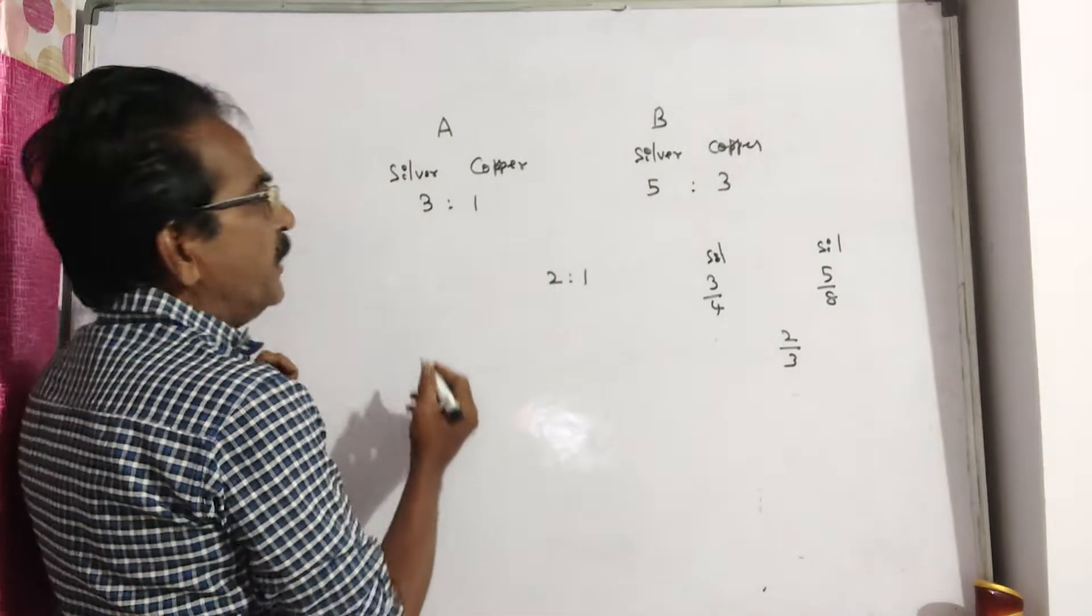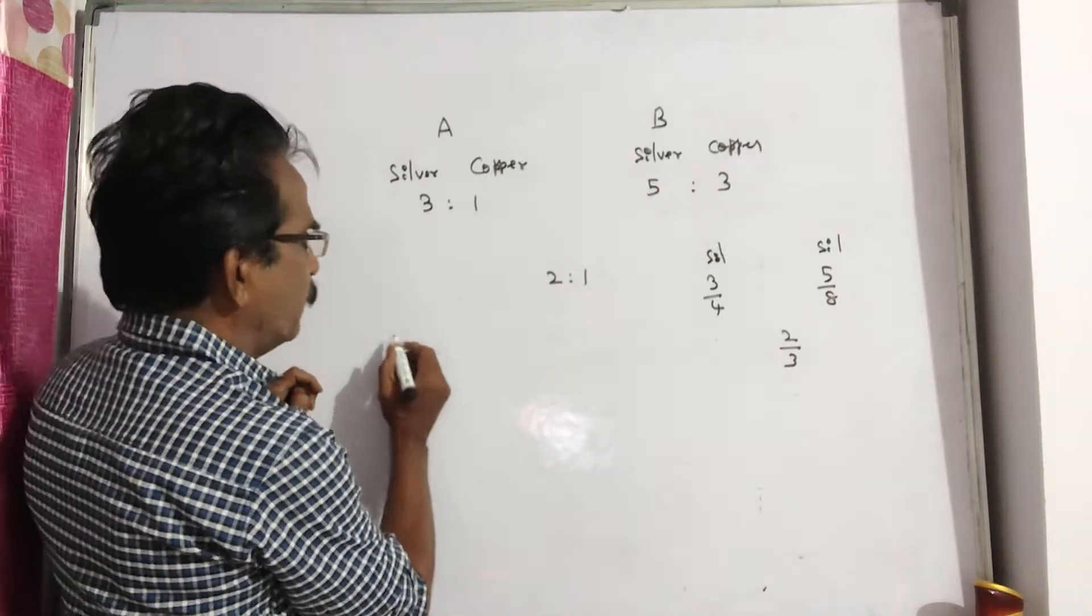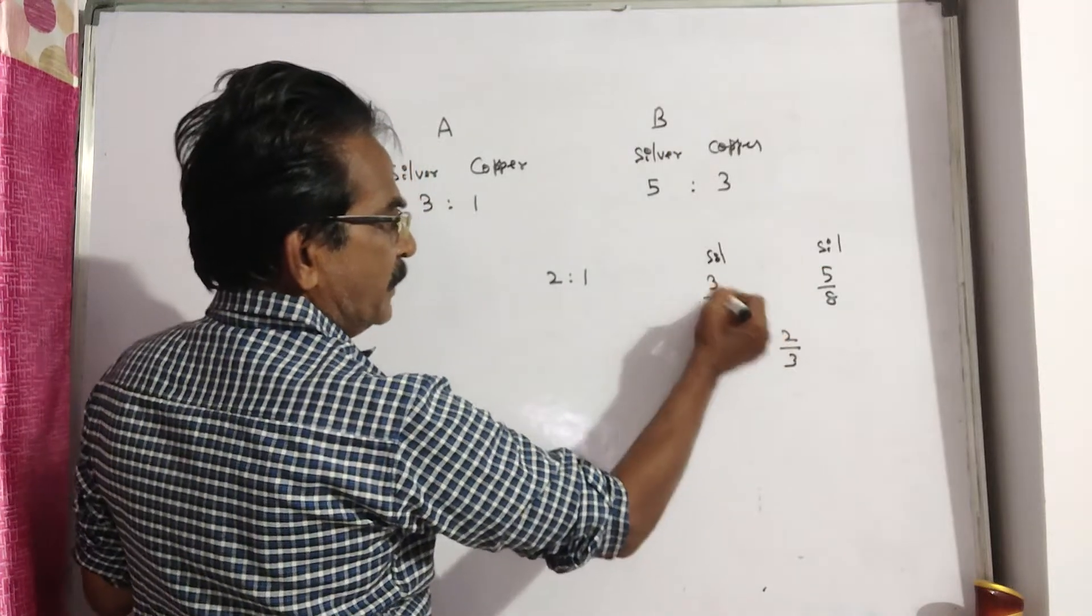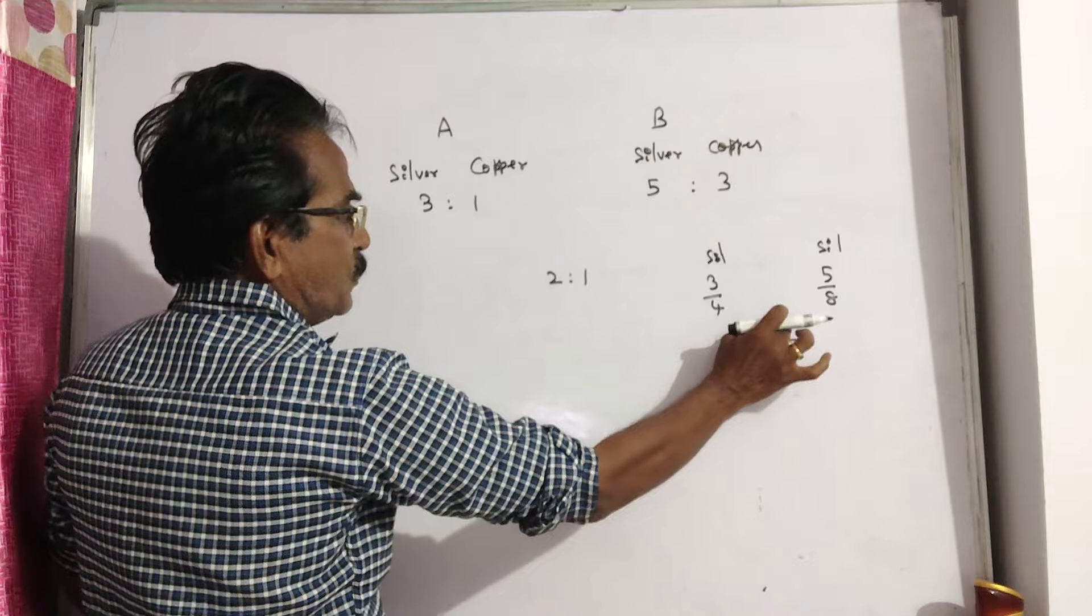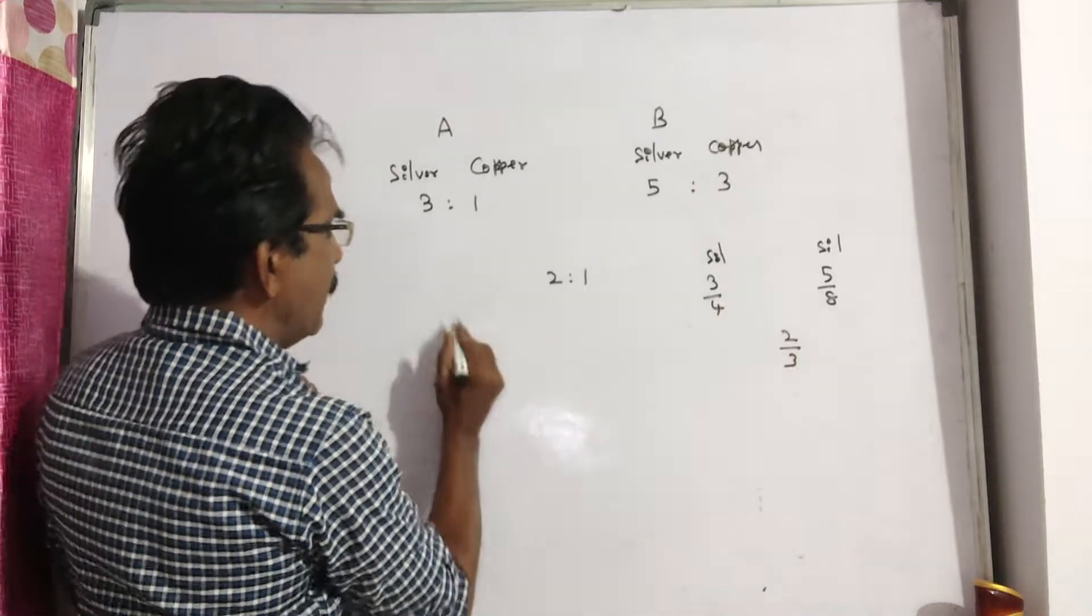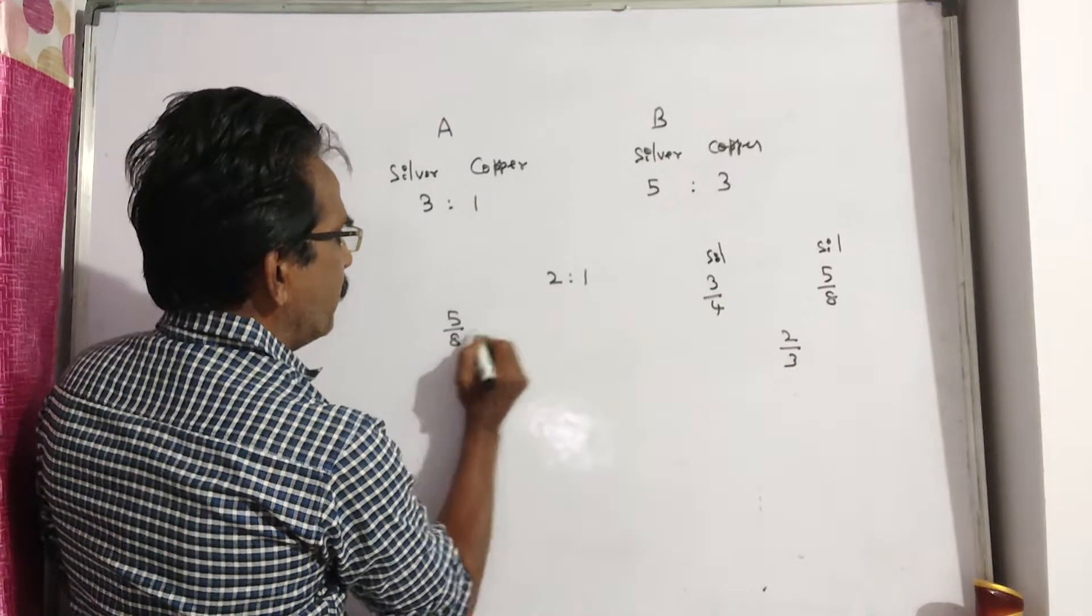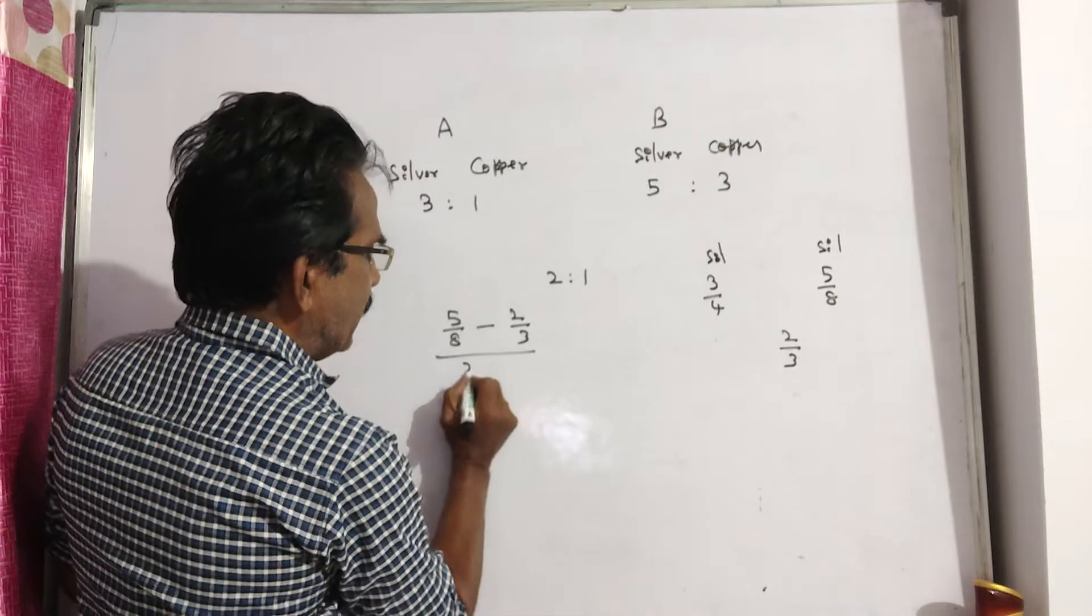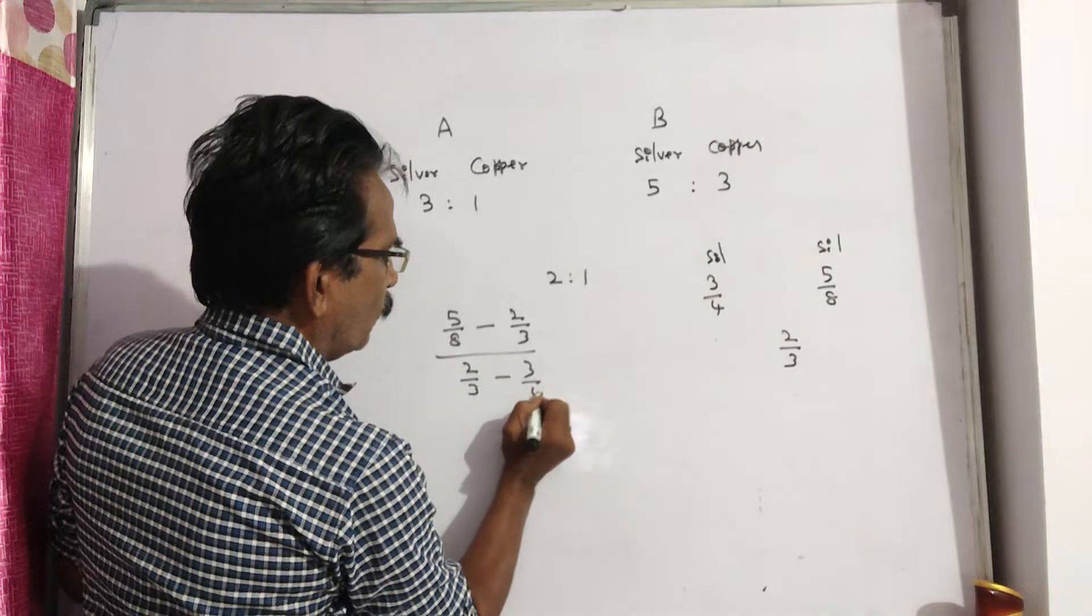So by rule of allegation we get the quantities ratio. Quantities ratio is equal to this minus this by this minus this. Difference of these two things by difference of these two things. 5/8 minus 2/3 by 2/3 minus 3/4.